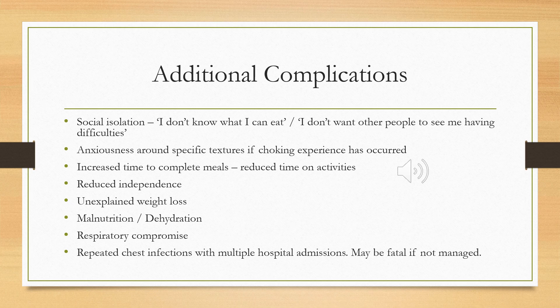Increased meal times might impact other activities of daily living. Another complication is reduced independence — a person may be dependent on support staff for food and care — and unexplained weight loss, malnutrition, or dehydration. A person can have respiratory difficulties and repeated chest infections with multiple hospital admissions, and unfortunately this can be fatal.